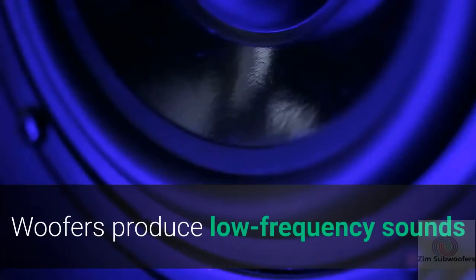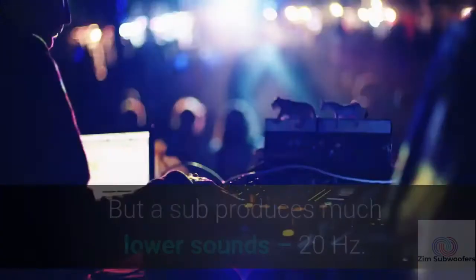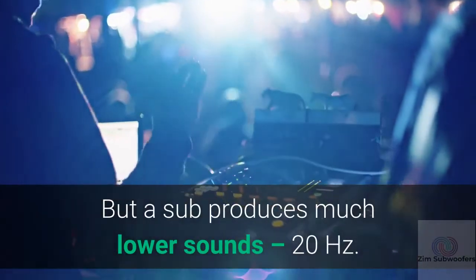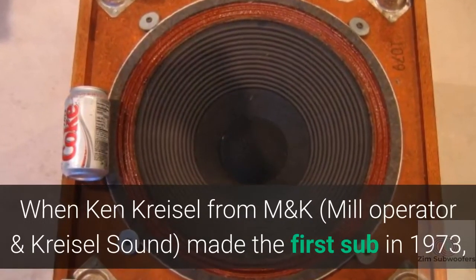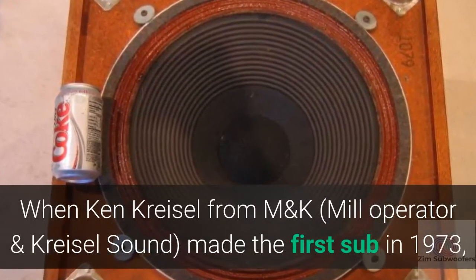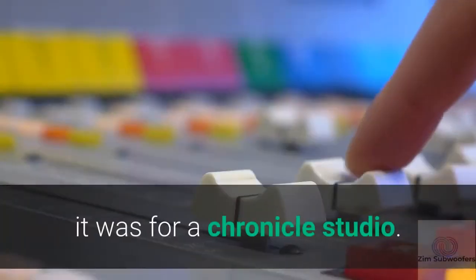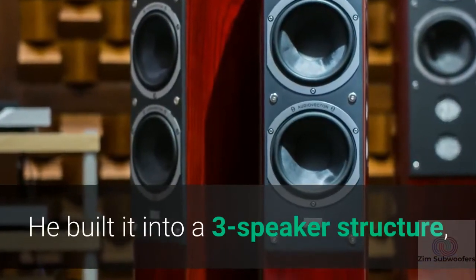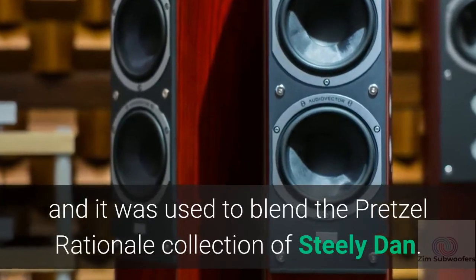Woofers produce low-frequency sounds like those within 40 and 80 hertz, but a sub produces much lower sounds, 20 hertz. When Ken Kreisel from M&K Mill Operator and Kreisel Sound made the first sub in 1973, it was for a Chronicle studio. He built it into a three-speaker structure and it was used to blend the Pretzel Rationale collection of Steely Dan.